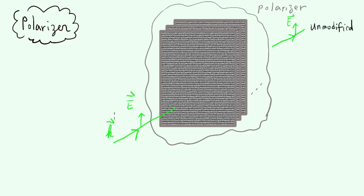So let's say that the original intensity is I₀. After passing through this polarizer, the intensity I is going to be I₀.